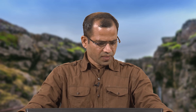Some facts about the crust: only the upper part of the crust is available for direct sampling, either directly or by bore holes. Geologic studies of high-grade metamorphic rocks that were once residing at 20 to 50 kilometer depth and have been brought to the surface by subsequent tectonic activity provide much useful information.